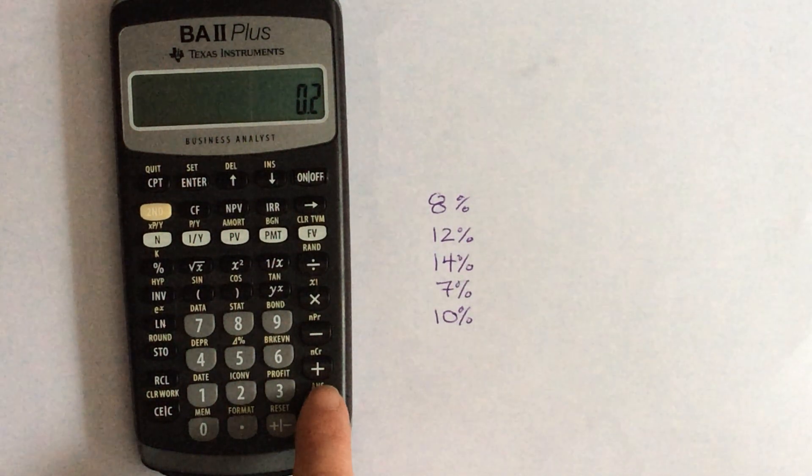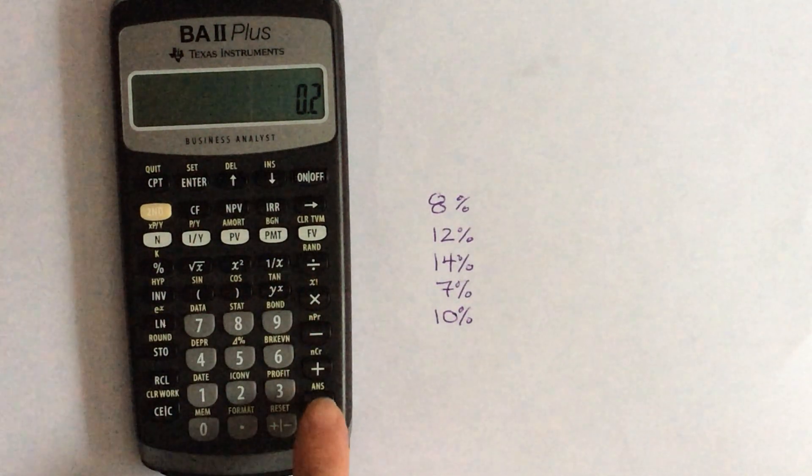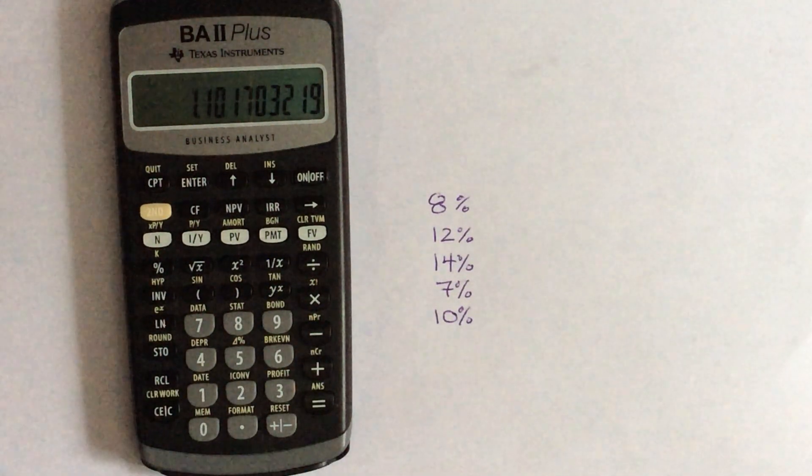So that you've raised it to the power of 1 over 5. It's a weird sequence of buttons, but that's what it is. And then you're going to hit equals.